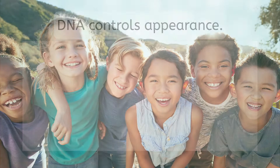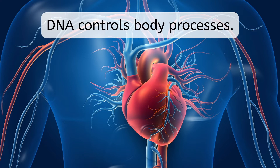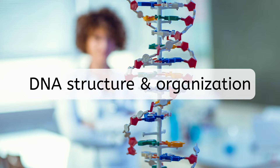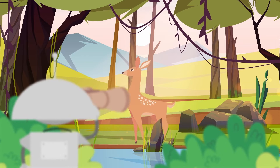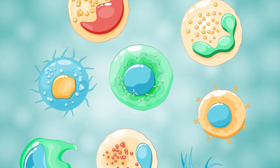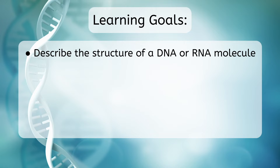These instructions control noticeable things, like appearance, but also control all of our body's functions and processes that keep us alive. In this lesson, we'll look at how a DNA molecule is structured and organized. And as we go through the rest of this unit, we'll study the processes that use our DNA to make proteins. After today's lesson, you'll be able to: 1. Describe the structure of a DNA or RNA molecule.